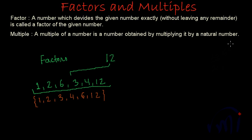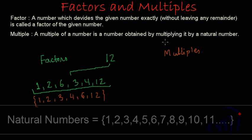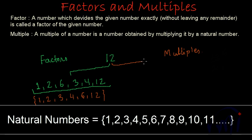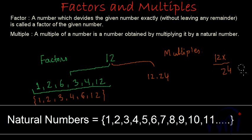Now if I talk about multiples — as per definition, a multiple of a number is a number obtained by multiplying it by a natural number. So if we take 12 and want to find its multiples, we multiply 12 by 1 to get 12. Then multiplying 12 by 2 gives 24, which is the second multiple. And multiplying 12 by 3 gives 36, which is the third multiple of 12.